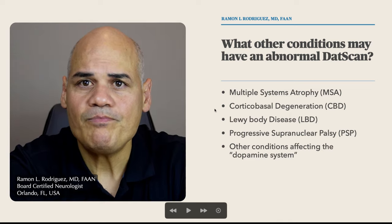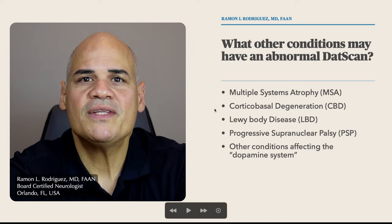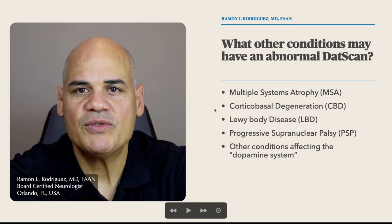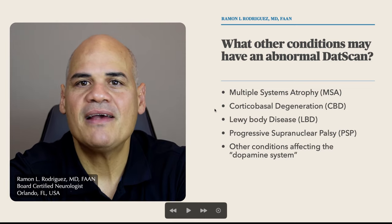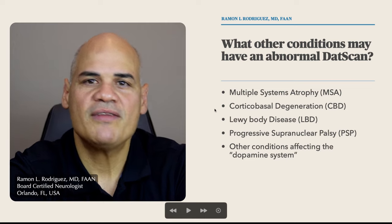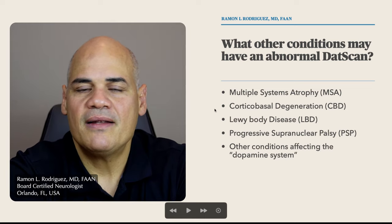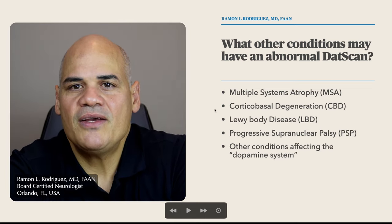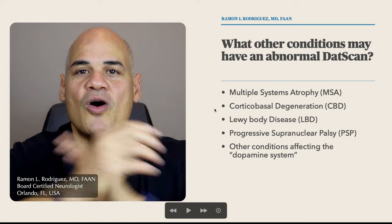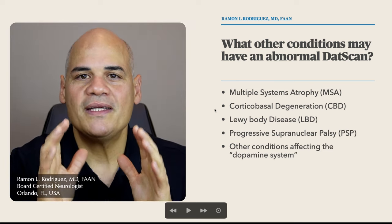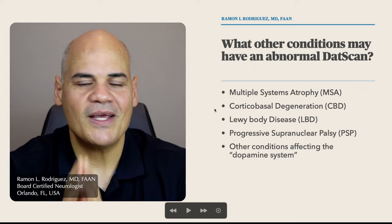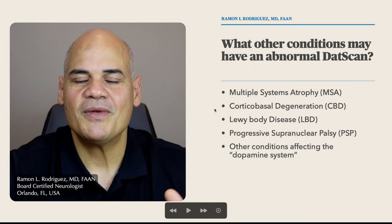So what other conditions may also show an abnormal DATScan? Multiple system atrophy (MSA), corticobasal degeneration, Lewy body disease, progressive supranuclear palsy, and basically any other condition affecting the dopaminergic system. Be aware that all these conditions look very similar to one another on the DATScan.